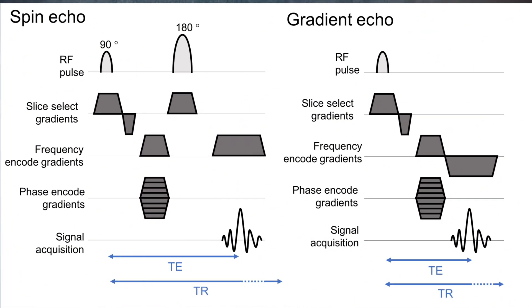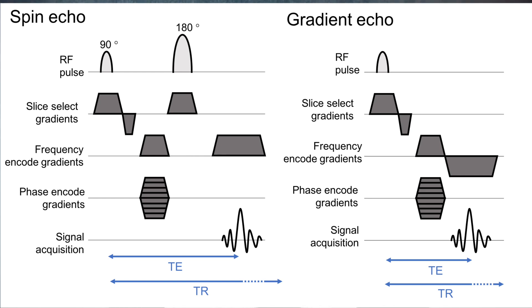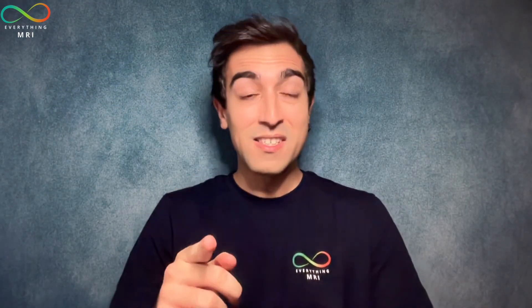In contrast to spin echo sequences — which, as we previously seen on this channel, use the classic combination of a 90-degree excitation pulse followed by a 180-degree refocusing pulse — gradient echo sequences step away completely from this structure. Here instead, the echo signal is generated using a single RF excitation pulse combined with a reversal of the magnetic field gradient, which leads to a key advantage: faster imaging.